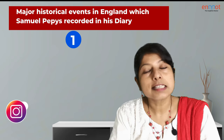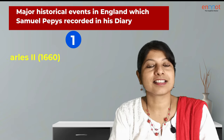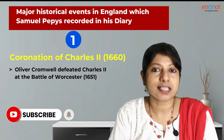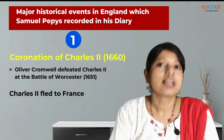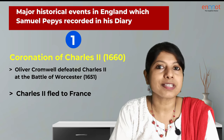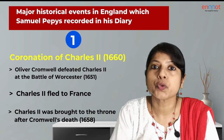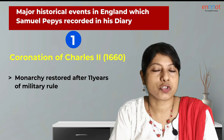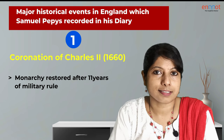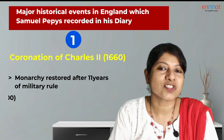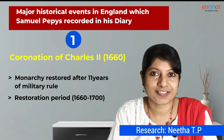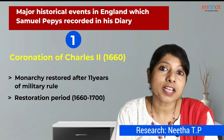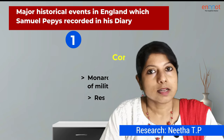The first incident recorded is the Coronation of Charles II. Charles II was defeated by Oliver Cromwell at the Battle of Worcester in 1651, following which Charles escaped to France. But after Oliver Cromwell's death in 1658, Charles II was brought to the throne — thus military rule under Cromwell ended and monarchy was restored. This is the reason why the period from 1660 to 1700 is named the Restoration period. Samuel Pepys was a witness to the Coronation of Charles II and he chronicled this ceremony in his diary.